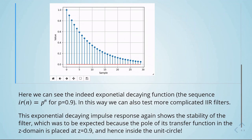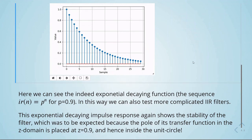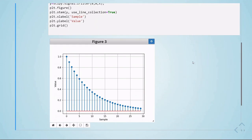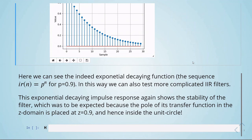This exponential decaying impulse response confirms the stability of the filter, as expected, because the pole of its transfer function in the z-domain is placed at z equals 0.9, which is inside the unit circle — so our filter is stable. That's it for this notebook. We'll see each other again on the next one.